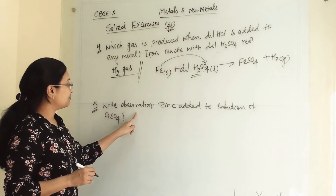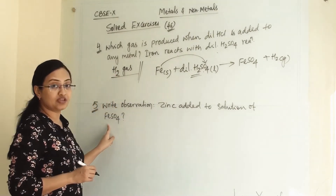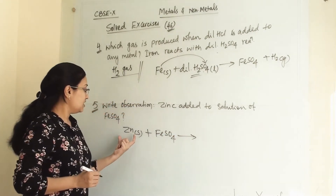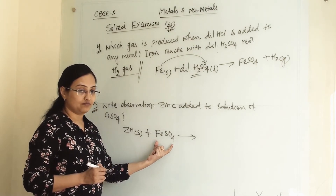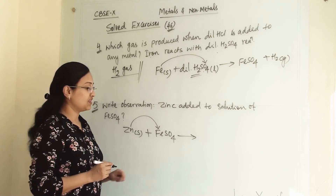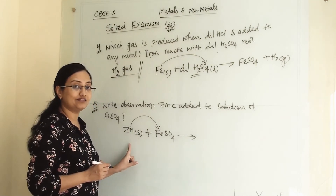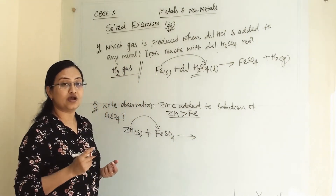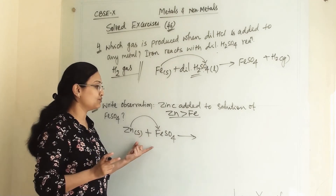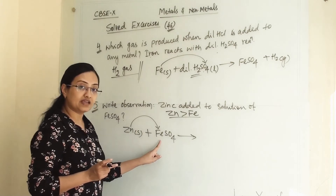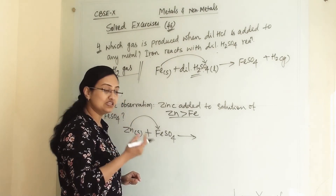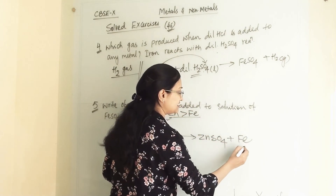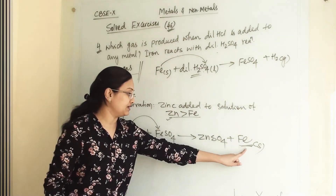The fifth question: write the observation when zinc is added to a solution of FeSO₄. Zinc (solid) reacts with FeSO₄. If zinc is more reactive than iron, it will replace iron from this compound; if less reactive, no reaction occurs. Since zinc is more reactive than iron — remember the activity series — zinc replaces Fe, giving ZnSO₄, and iron is separated in solid form. This is a displacement reaction.